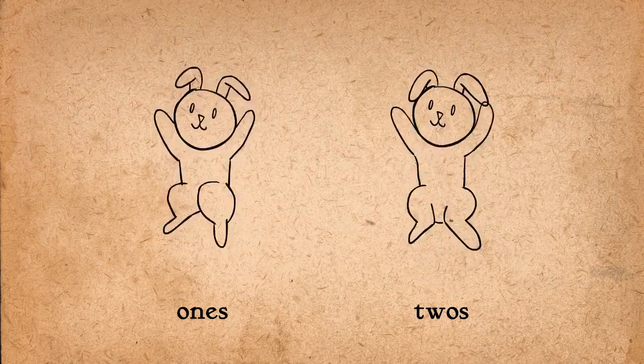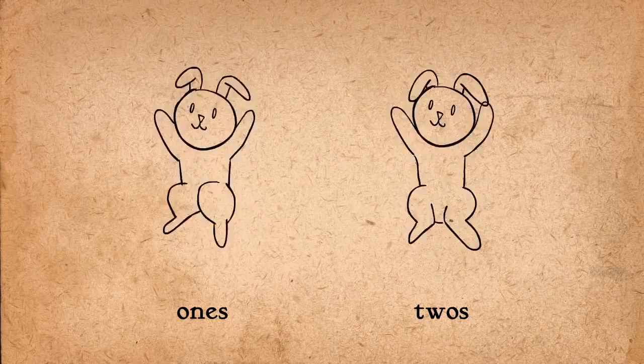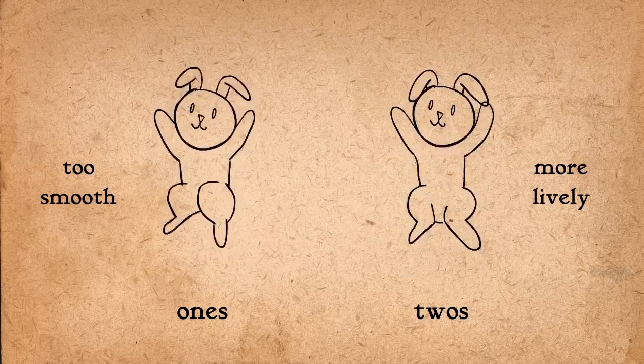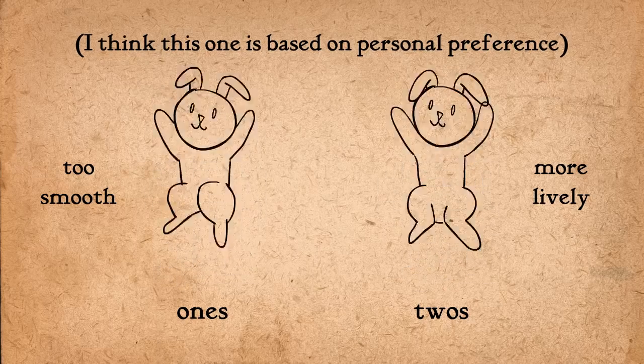Some would also say that drawing on twos is better for fast actions as well, because it gives a sparkle and spirit to the animation that would otherwise be too evenly timed and less lively if it were drawn on ones.